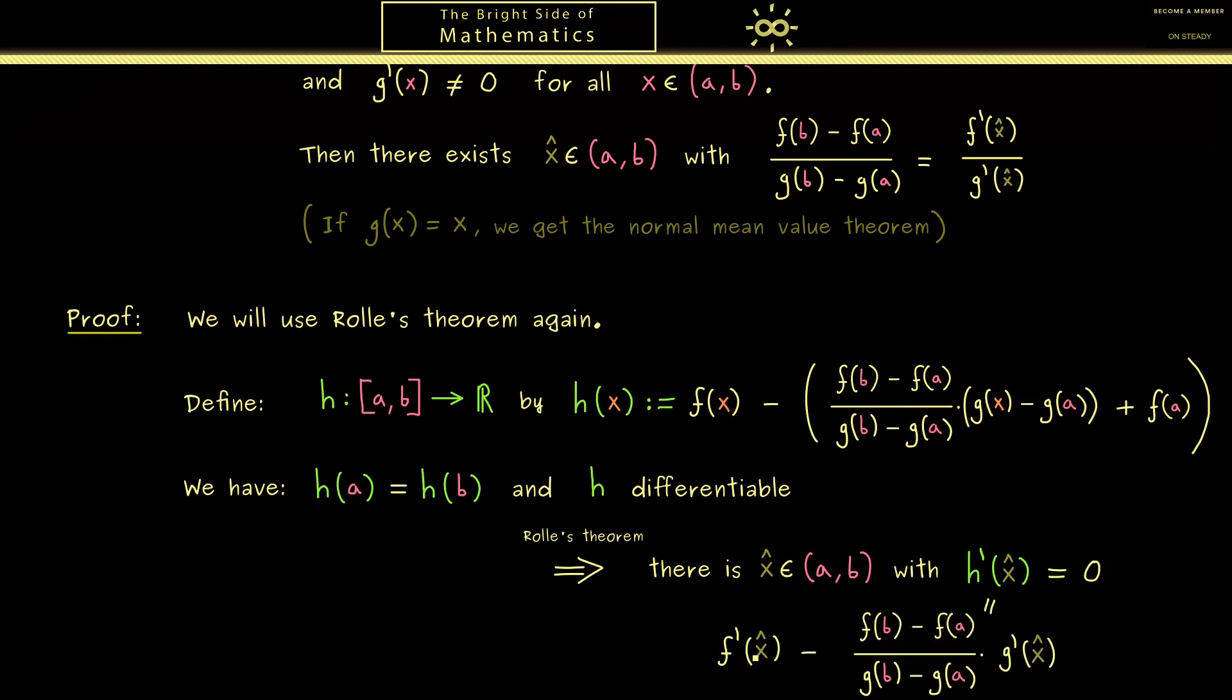We immediately get f'(x̂) minus this strange slope times g'(x̂). Now reformulating shows this is exactly our claim. Hence the proof of this extended mean value theorem is finished.